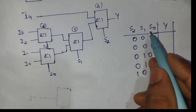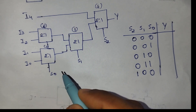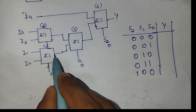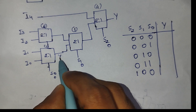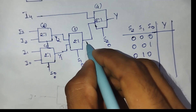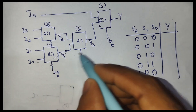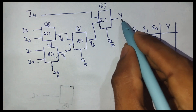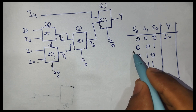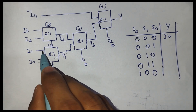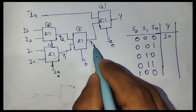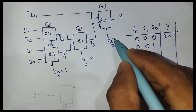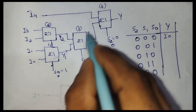When s2 s1 s0 are 0 0 0, s0 is 0, s1 is 0, and s2 is 0. The first mux output y1 is i0, the third mux output y3 is i0, so the final output y is i0. Similarly, when s2 s1 s0 is 0 0 1, y1 becomes i1, y3 is also i1 since s1 is 0, so the output is i1.